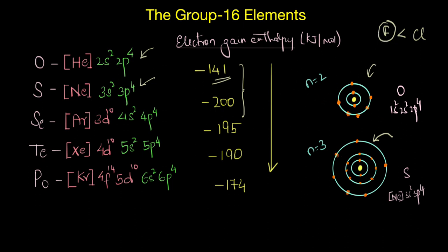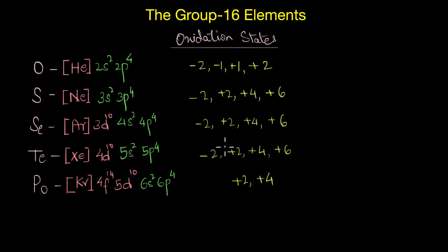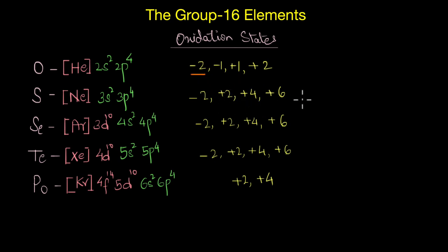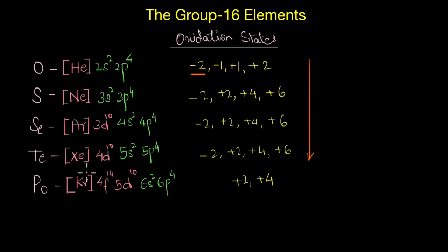Lastly, let's look at oxidation states. Group 16 elements exhibit a varied number of oxidation states, with −2 being the most common — obviously, since they are just two electrons away from the noble gas configuration. However, as discussed in the case of the nitrogen family, the stability of the −2 oxidation state decreases as we go down the group.